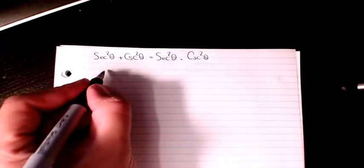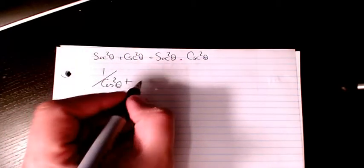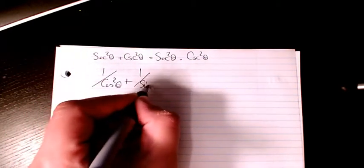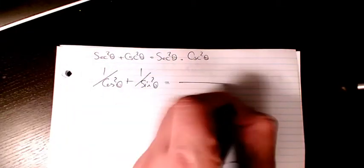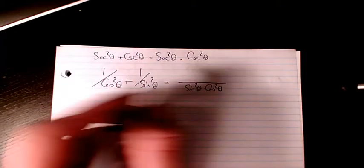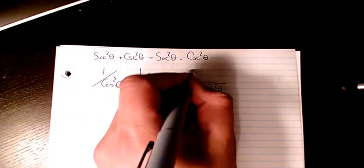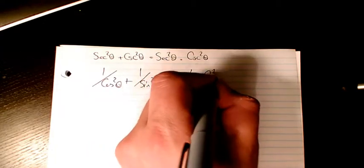So I have secant is 1 over cosine squared and cosecant is 1 over sine squared. Then I will have common denominator, so sine squared theta times cosine squared theta. Then I will have sine squared theta plus cosine squared theta.